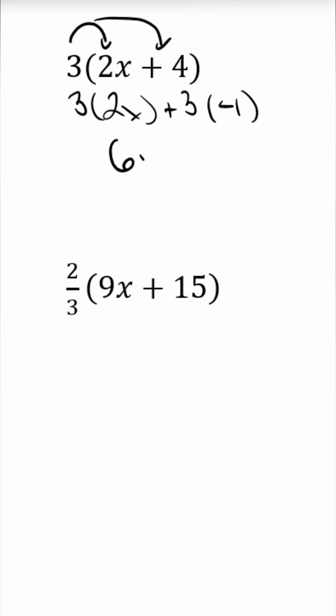3 times 2x is going to give us 6x, and 3 times 4 is going to give us 12. So our simplified expression is going to be 6x plus 12.